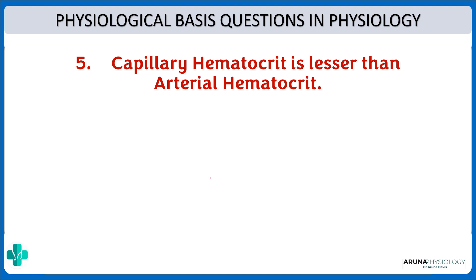Next: why is capillary hematocrit lesser than arterial hematocrit? If you take blood from a capillary — say by puncturing a finger — and calculate the PCV, then compare it with blood taken from an artery, the capillary hematocrit will be lesser than the arterial one. The answer here is plasma skimming.